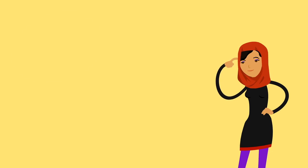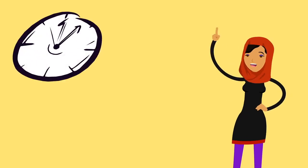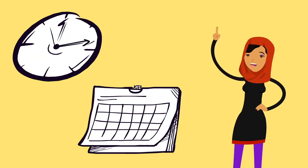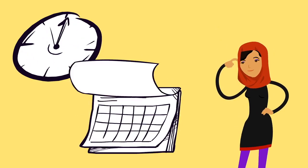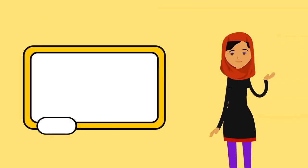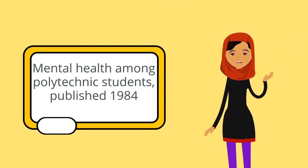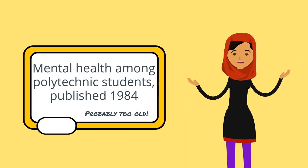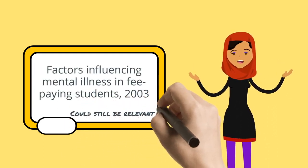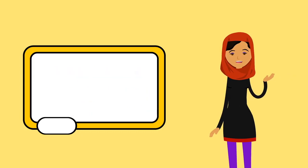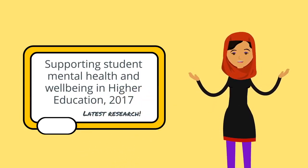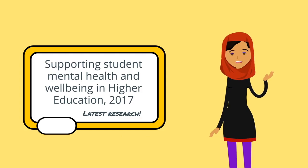You should also consider how far back in time you want to go. Depending on your topic, there may be published research going back decades. You will need to ask yourself, how old is too old? If you found a paper from 30 years ago, would so much have changed since then that it is no longer relevant? How about 10 years ago? Or 5? Or 3? This will depend on your topic, so you'll need to decide your own limit.